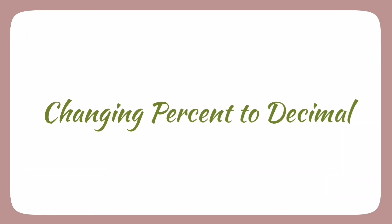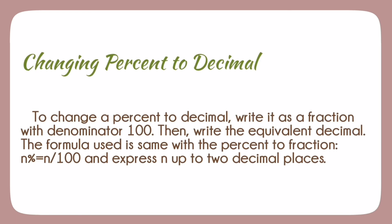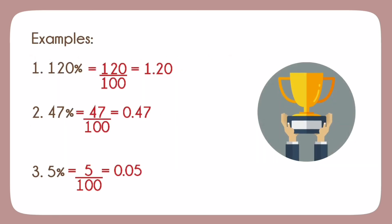Changing percent to decimal. To change a percent to decimal, write it as a fraction with denominator 100. Then write the equivalent decimal. The formula used is same with the percent to fraction. n% equals n over 100 and express n up to two decimal places. Here are some examples. Remember that 120 over 100 and 1.2 are both up to the hundredths place. Likewise, 47 over 100 and 0.47 are both read as 47 hundredths. Same goes with 5 over 100 or 0.05.